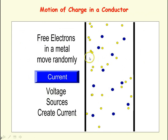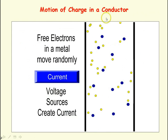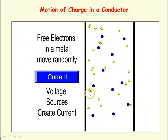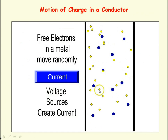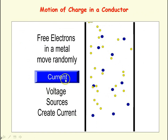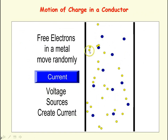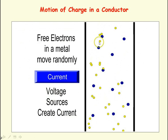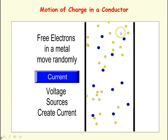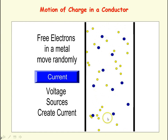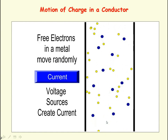Here we have an animation showing the motion of the electrons, shown in yellow, in a conductor. In the conductor with no voltage, no potential difference, you can see the electrons are moving rapidly and randomly in all different directions, with no net movement in one direction. When we apply a voltage across the conductor, individually the electrons are still moving rapidly and randomly, but now there's a net movement in one direction, giving rise to a current.